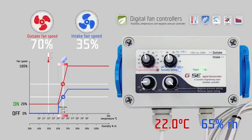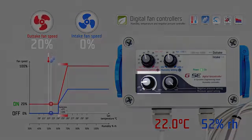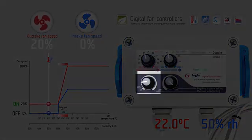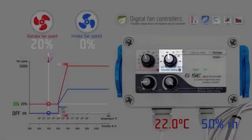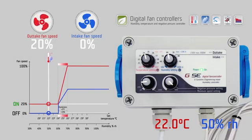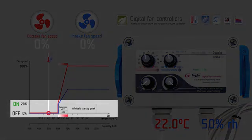The minimum speed setting sets the desired minimum speed on the outtake fan. It is the strongest setting and always overrides the temperature and humidity setting. If you set the minimum speed setting to the off position, the fans will stop working when the measured temperature and humidity are below their set values. The minimum speed setting has a 20 percent start-up peak to give enough power to the outtake fan to run at low speed.